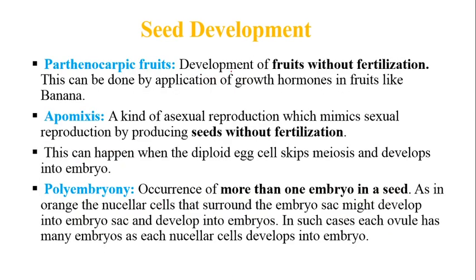Parthenocarpic fruits are fruits that develop without fertilization, where growth hormones can help — like in bananas. Apomixis is a kind of asexual reproduction that mimics sexual reproduction, but seeds are produced without any fertilization. This can happen when the diploid egg cell skips meiosis and develops directly into the embryo, remaining at the 2N stage throughout development.